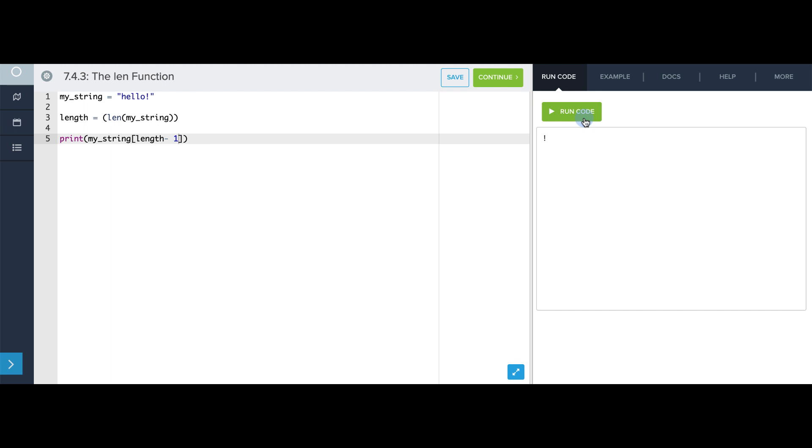Now let's write a for loop to print each character in this string. So I'm going to get rid of this, and first I'm going to say for i in range, and the thing that goes in range here is len my_string, and I'm going to print my_string at i.